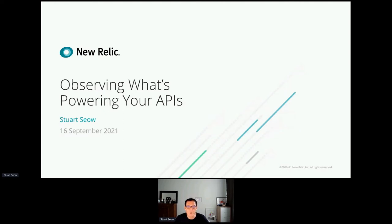We do this by making instrumentation as frictionless as possible for developers and engineers so that they can easily explore data regarding the performance and reliability of the applications and APIs they're building, and troubleshoot the software. My goal in this session is to share what's required for observability, some best practices around incorporating observability into your software lifecycle, and how you can use it to build better software.